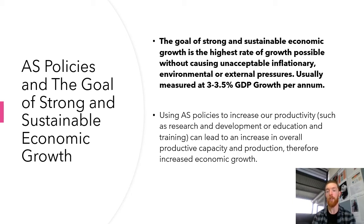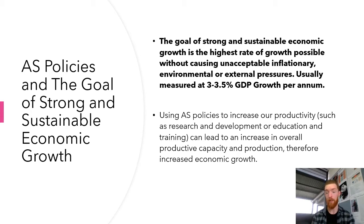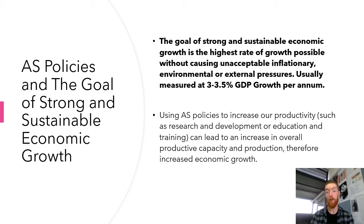Following the logic: if there is successful research and development, there may be increased efficiency in the workplace and a lower average cost of production. This leads to more output per unit of input, meaning higher rates of production. Higher rates of production mean higher gross domestic product and therefore increased economic growth. So aggregate supply-side policies, when used effectively, should increase our economic growth and help us achieve that goal of 3.5 percent GDP growth per annum.